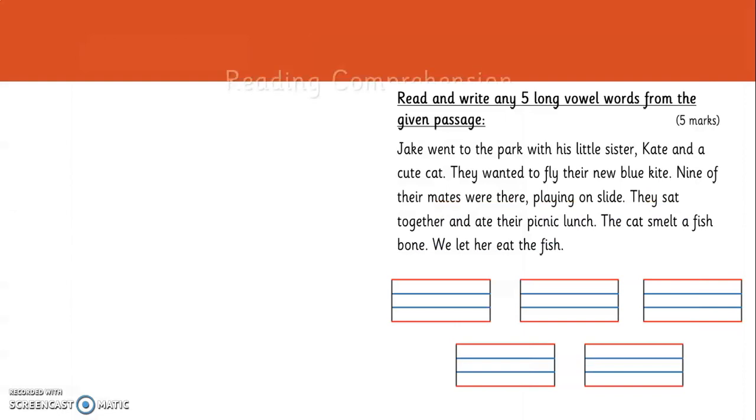And this is reading comprehension. So read this passage. Here in this passage, you have to find at least five long vowel words with magic key. You have to find and write in these boxes with the correct formation.